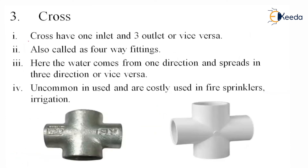The third is the cross fitting. A cross has one inlet and three outlets, or vice versa, and is also called a four-way fitting. Water comes from one direction and spreads in three directions. Cross fittings are uncommon in use and are costly. They are used in fire sprinkler systems or irrigation systems, connecting four different pipes.